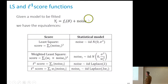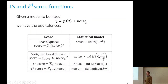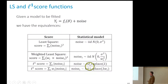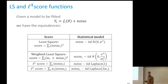Model fitting with L1 noise is equivalent to assuming a noise model where the noise follows a Laplace distribution, which is a symmetric exponential distribution, whereas least squares corresponds to assuming the noise is Gaussian. The difference between Laplace and Gaussian is that Laplace has a heavier tail — large noise values are less unlikely than with Gaussian.